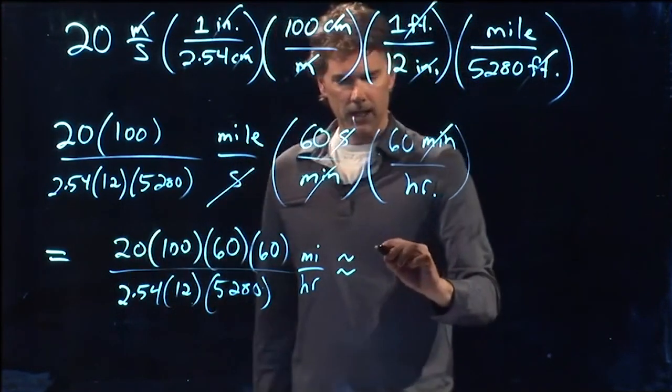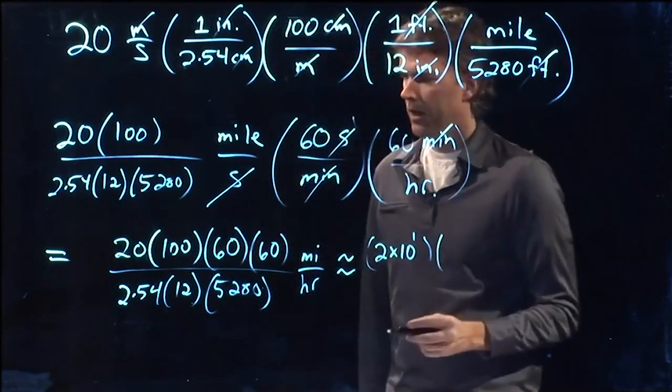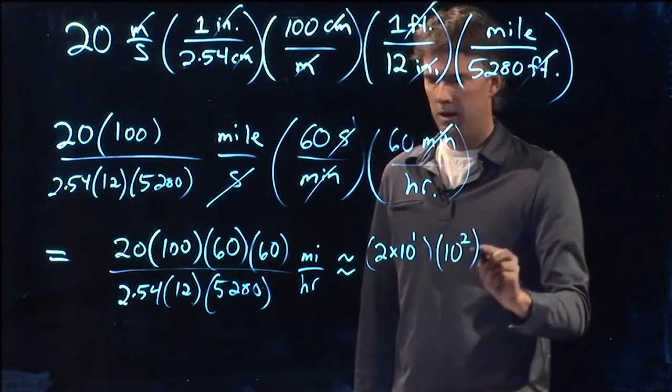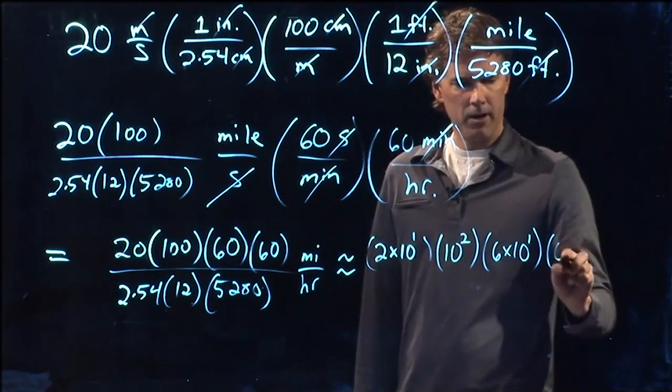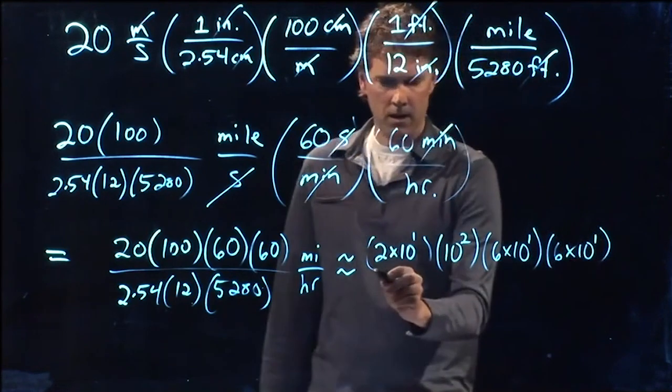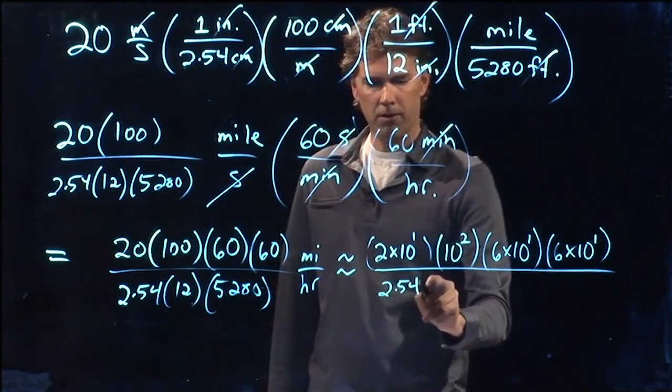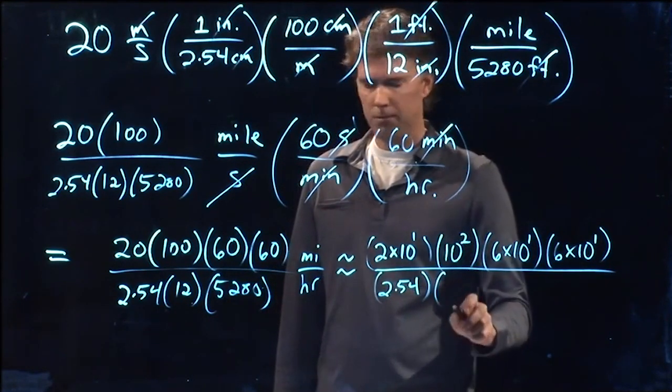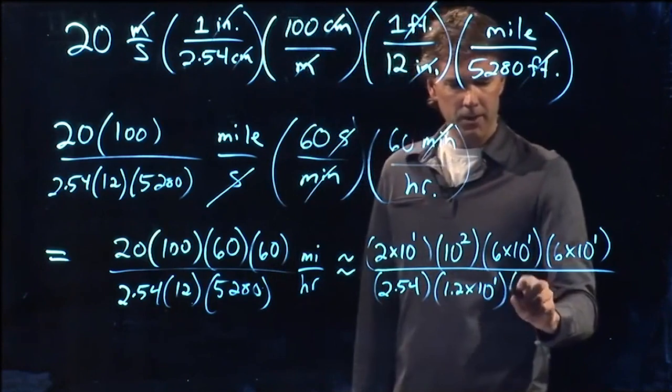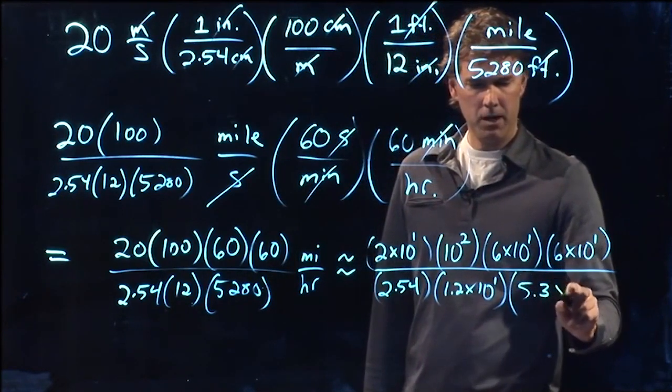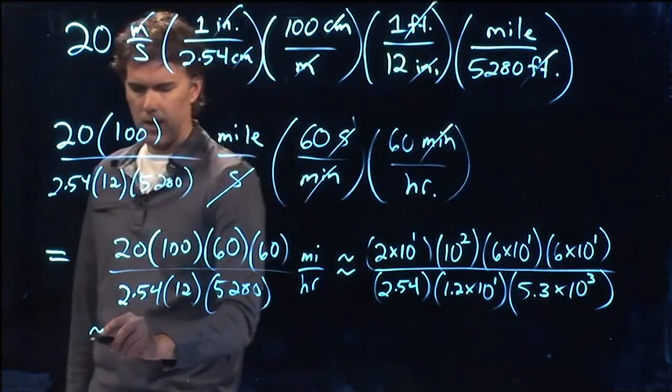So 20 is 2 times 10 to the 1. 100 is 10 to the 2. 60 is 6 times 10 to the 1. And we have another one, 6 times 10 to the 1. And then we are going to divide by 2.54 times 12, which is 1.2 times 10 to the 1. 5280, which is 5.3 times 10 to the 3. And now we should be able to multiply all those numbers.